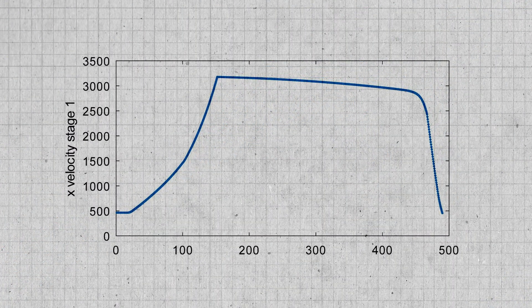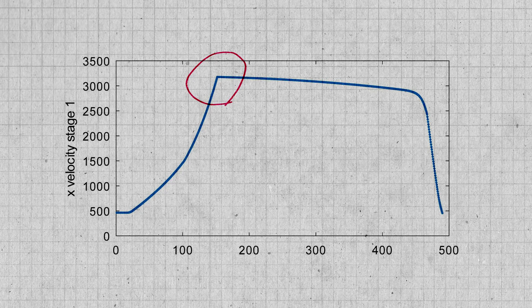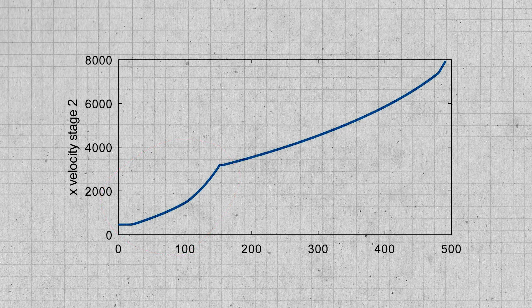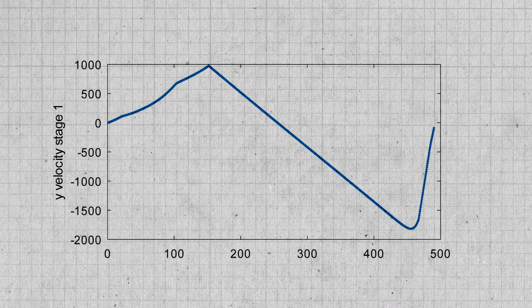Looking at the x velocity of stage one: it starts at about 500 meters per second because when you launch you're moving with the earth. That velocity stays constant until you start turning, then exponentially increases until MECO, where it dead stops. In orbit there's not much drag so it stays almost perfectly level until re-entry. Comparing to stage two, initially they're identical because the stages are connected, but after a brief pause for stage separation it continues to exponentially grow until it reaches orbital velocity. There's a weird tail at the end — that's because we shut off the second stage engine, and that's just the acceleration of gravity as we travel along the orbit.